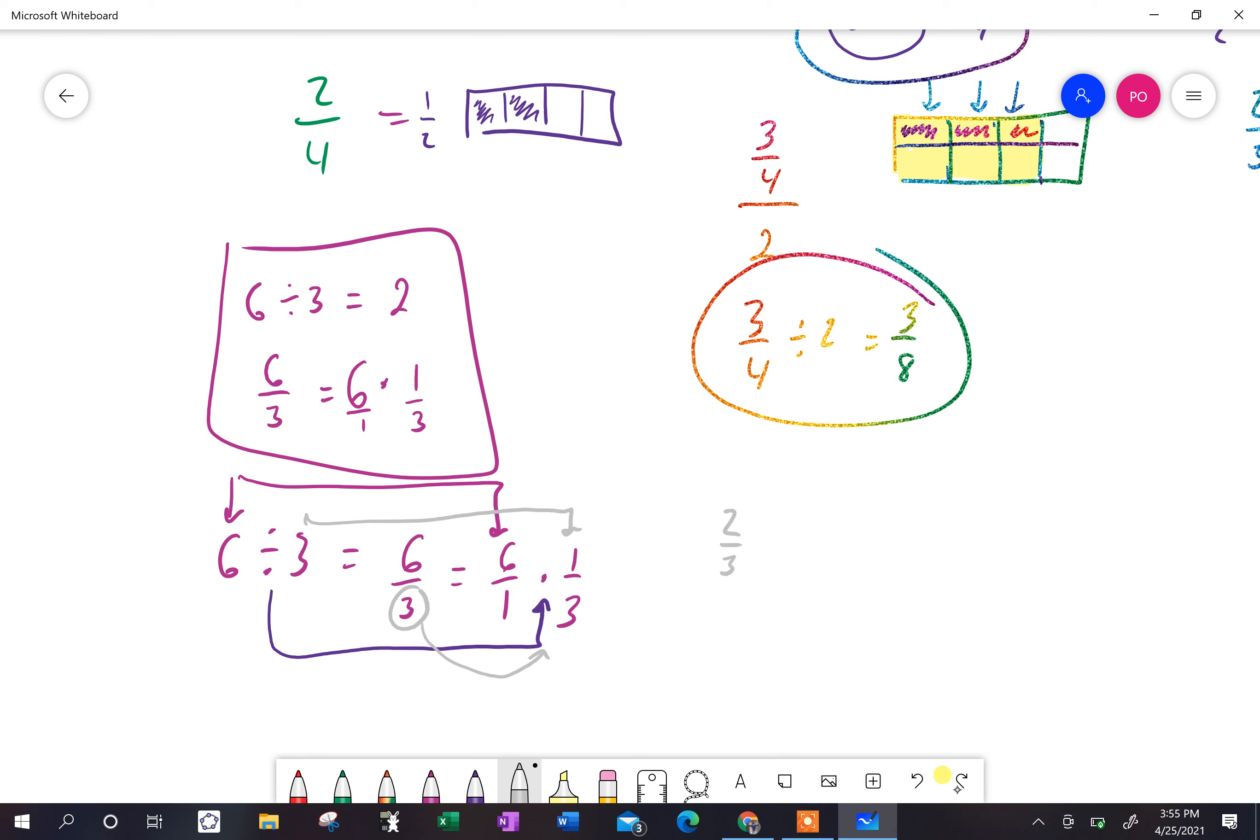So if you have something like this, two thirds divided by, let's say, six ninths, you could say, well, that's going to be equal to two over three over six over nine.